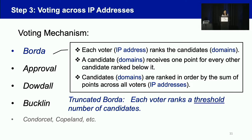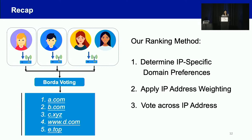In our paper, we also evaluate different ranking methods. To recap our ranking method: first, we determine the IP-specific domain preference; then we apply IP address weighting; finally, we vote across all IP addresses to produce the final global ranking.